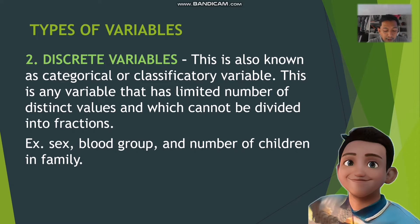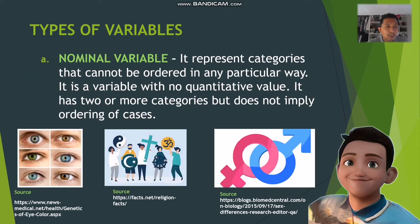There are two types of discrete variables: nominal variables and ordinal variables. Nominal variables represent categories that cannot be ordered in any particular way. They are variables with no quantitative value, having two or more categories but implying no ordering of cases. Examples include eye color, religion, and gender.